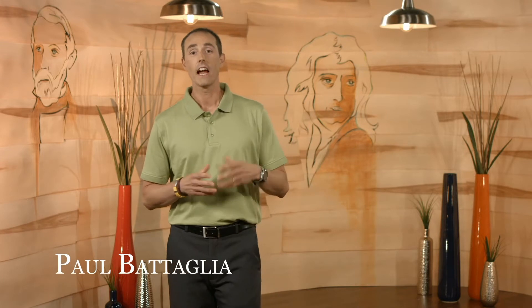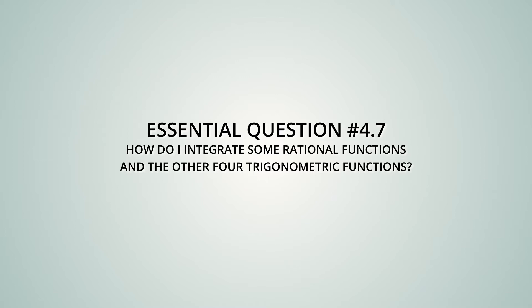Hi, I'm Paul Battaglia, and this is Section 4.7. Students enter 4.7 having knowledge of some basic integration rules. Now they have a better idea of using a more complex strategy in integration by substitution, and it's time to expand the inventory of functions that they can integrate, namely some rational functions and the other four trig functions as well. The essential question we would like students to be able to answer at the end of Section 4.7 is: how do I integrate some rational functions and the other four trigonometric functions?